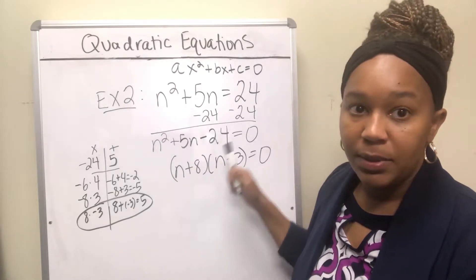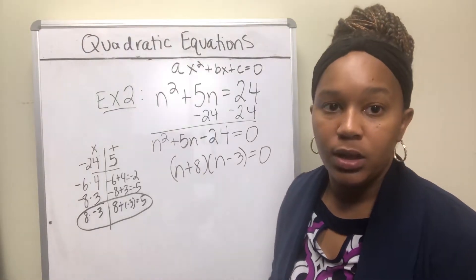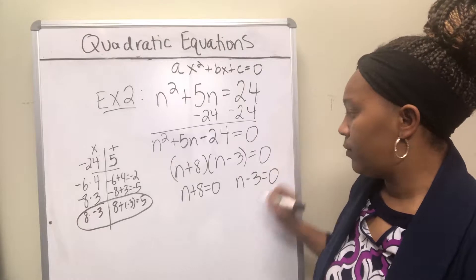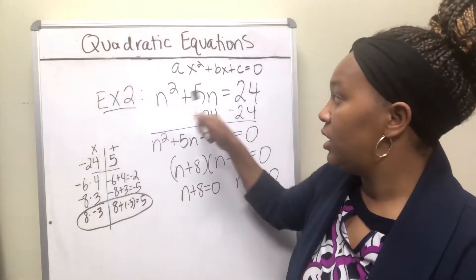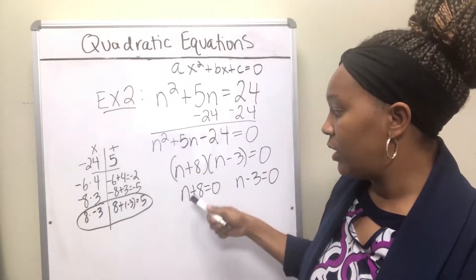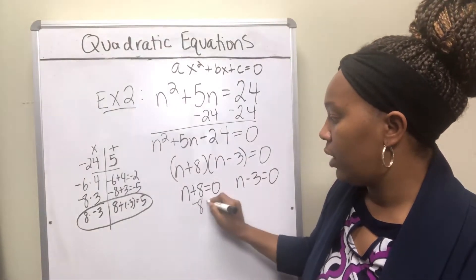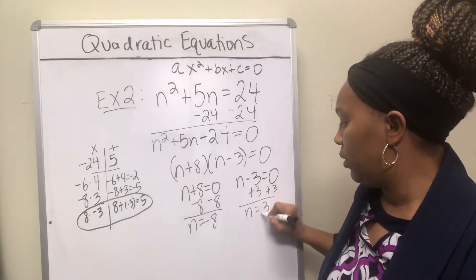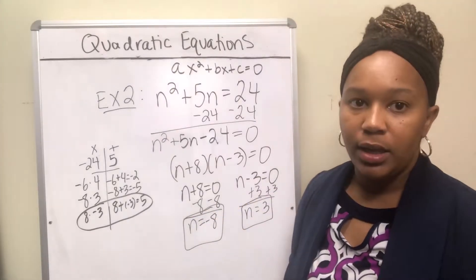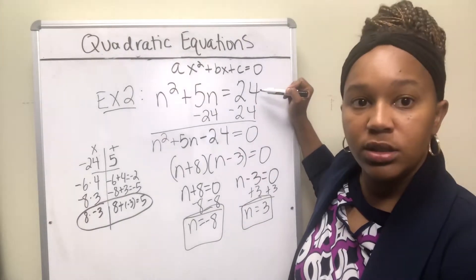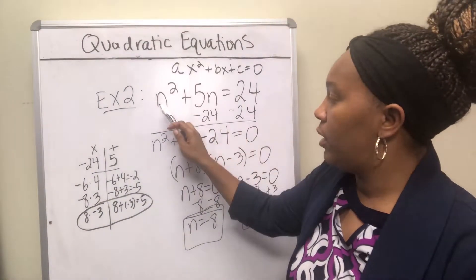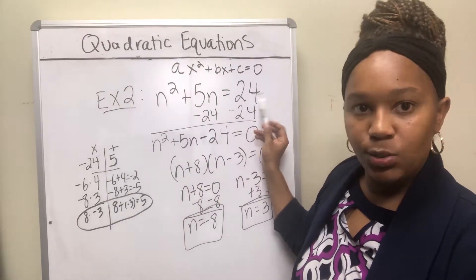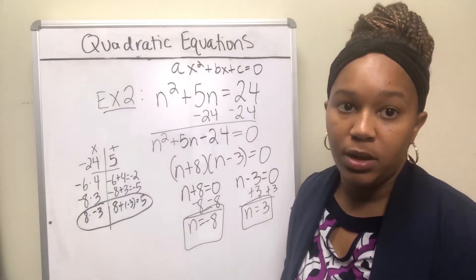Now we have two things that multiply to give zero, so by the zero product property, one of those expressions has to be zero. Either n plus 8 equals zero, or n minus 3 equals zero. Subtracting 8 gives n equal to negative 8, and adding 3 gives n equal to 3. So we get two answers: n equals negative 8 and n equals 3. You can verify by plugging in 3: 3 squared is 9, 5 times 3 is 15, and 9 plus 15 is 24. These answers make the original equation true.